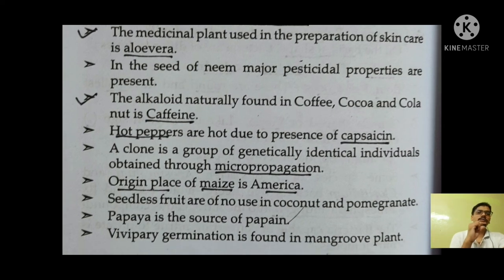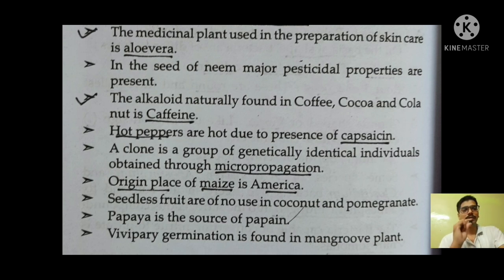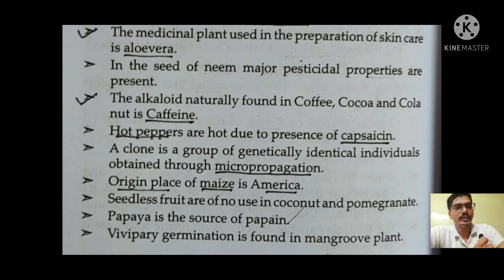Water of coconut is liquid endosperm. Aloe vera is used for medicinal purposes. The alkaloid found in coffee, cocoa, and cola is caffeine. Hot peppers are hot due to the presence of capsaicin. The origin of maize is America. That's all for this lecture — see you in the next lecture with a new topic. Stay tuned. Thank you.